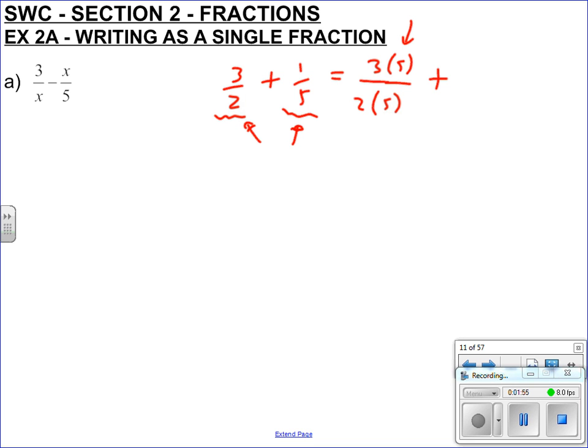This one has a five, it doesn't have a two, so I need to times it by two. That way both denominators are the same. So 3 times 5 is 15 over 10, plus 1 times 2 is 2 over 10. Now you've got a common denominator so you can put them together: 15 plus 2 is 17 over 10.